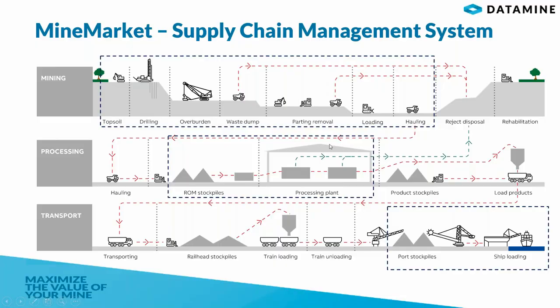Let's start with a description of the need for blending. Here is the process flow of a generic mining operation. As you can see throughout the supply chain, there are various points where a decision is required to select a subset of stockpiles or mine sources to put through the process to make it optimal in terms of tons and grades, as highlighted by the blue boxes which we'll discuss next as scenarios.